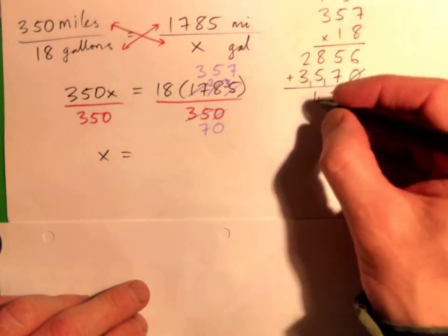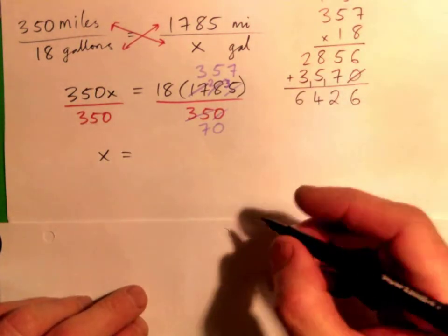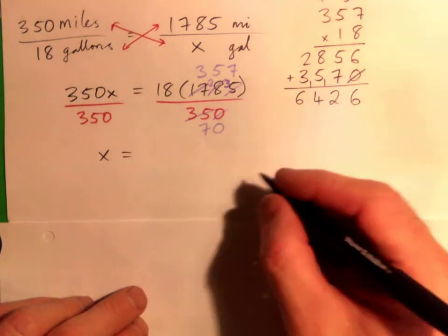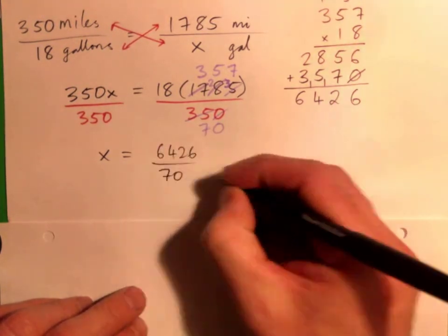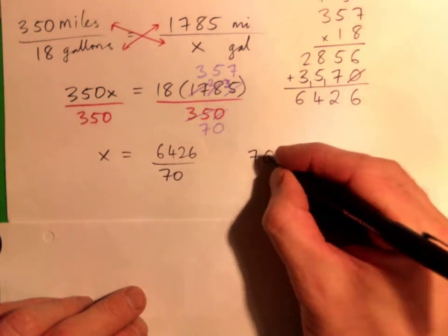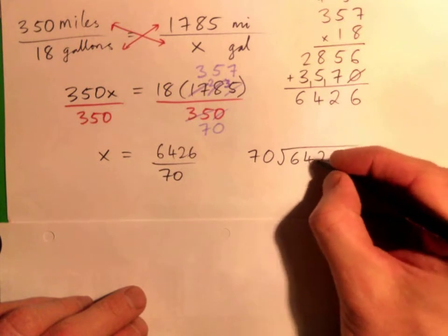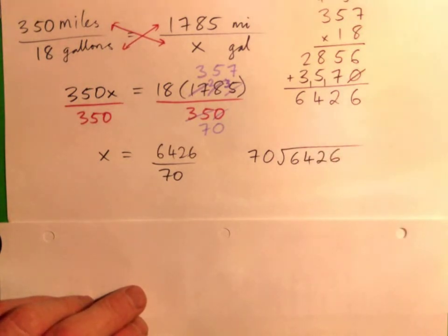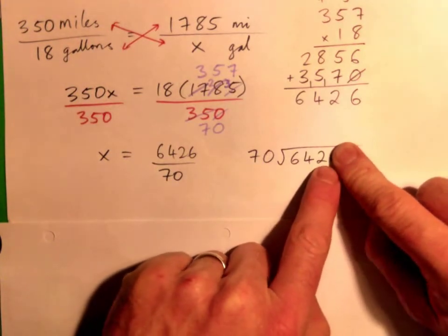So I have this over 70. So I know that 6426 over 70, and I can do long division now, right? So 70 into 6426.